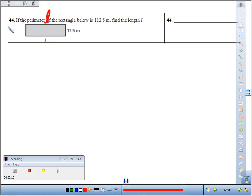If this is a rectangle, this would also be L and this would be 12.5. So if I add up the perimeter, 12 and a half times 2 plus 2L is going to equal 112 and a half.